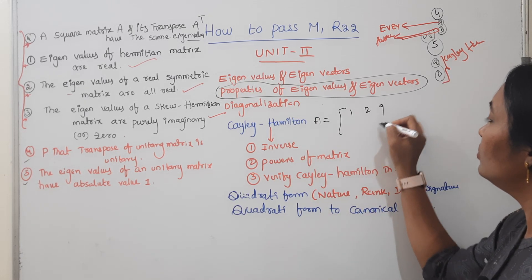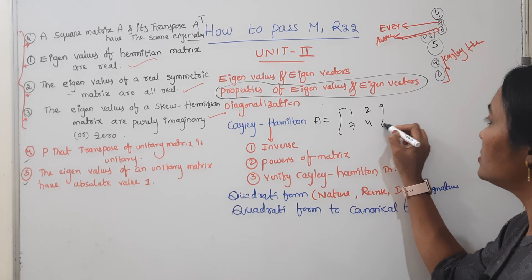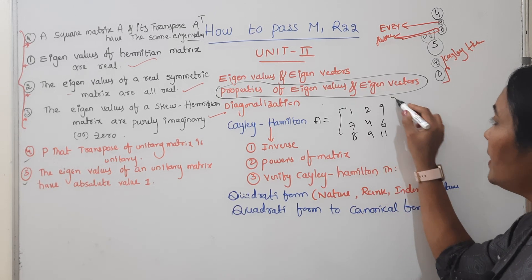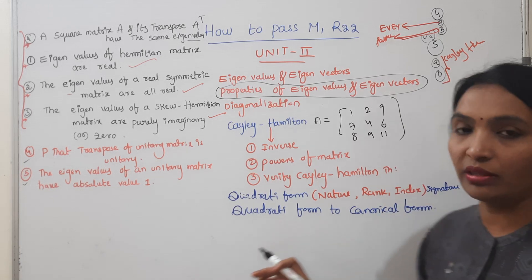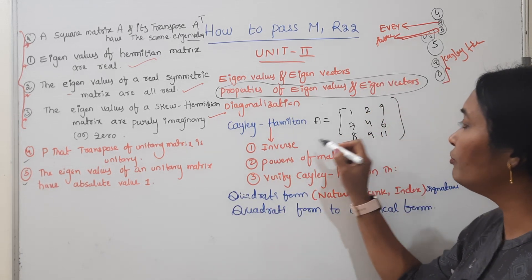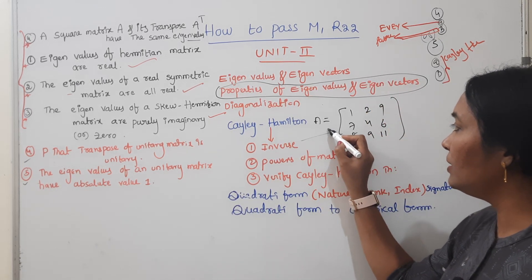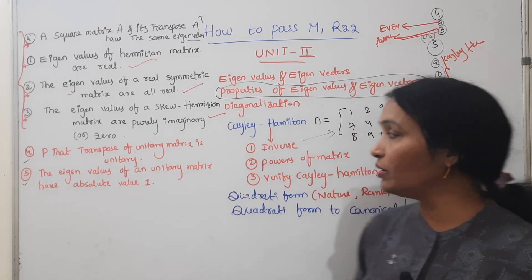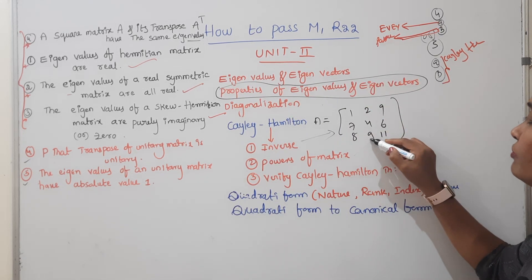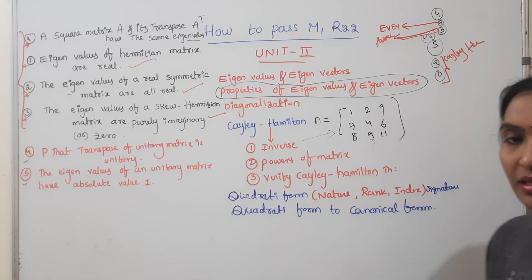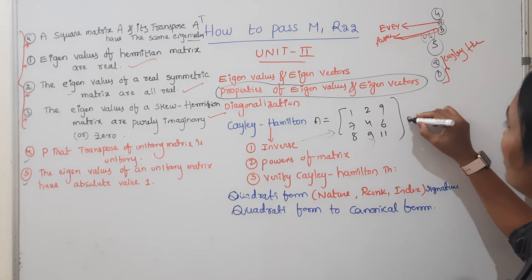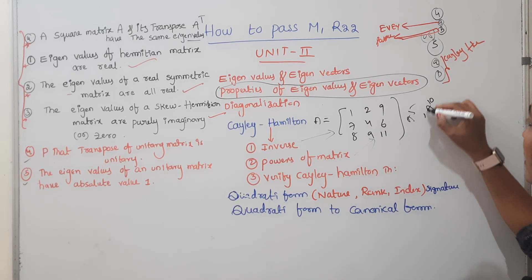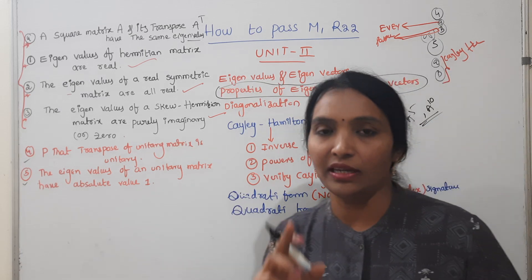The matrix is: 1, 2, 9, 7, 4, 6, 8, 9, 11. Find the inverse of A. The inverse is not found out directly — it involves the powers of this matrix. Powers means A power 5, A power 10. I will explain this in my playlist.